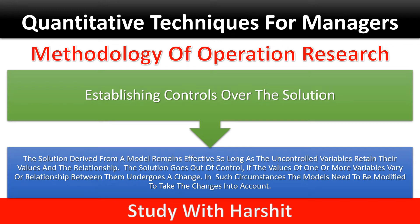Establishing controls over the solution: The control derived from a model remains effective so long as the uncontrolled variables retain their values and relationships. The solution goes out of control if the values of one or more variables vary or the relationship between them undergoes a change. In such circumstances, the model needs to be modified to take the change into account.